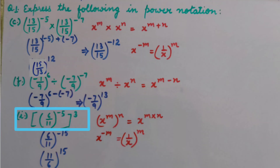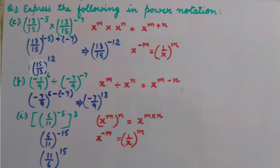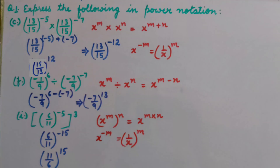Part I: 6 upon 11, whole raised to power minus 5, whole raised to power 3. Here we can see power on power is given, so we use the law: x raised to power m, whole raised to power n, equals x raised to power m multiplied by n. That gives 6 upon 11, whole raised to power minus 50. Now we make the power positive using x raised to power minus m equals 1 upon x raised to power m, giving us 11 upon 6, whole raised to power 50.